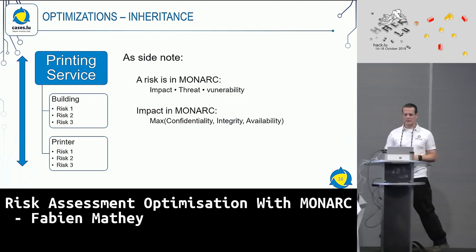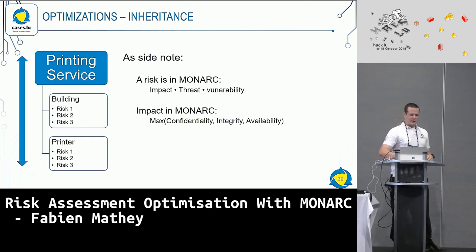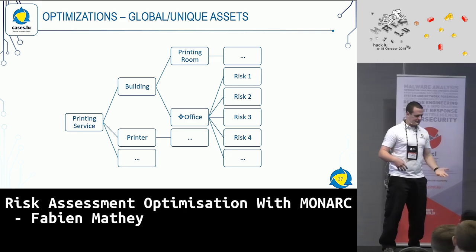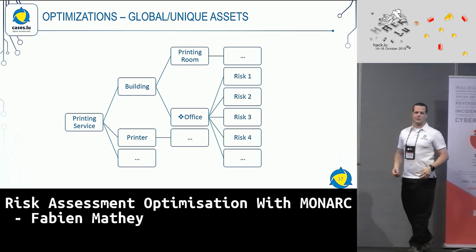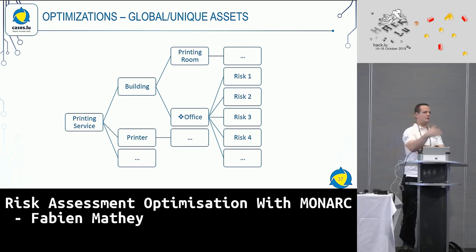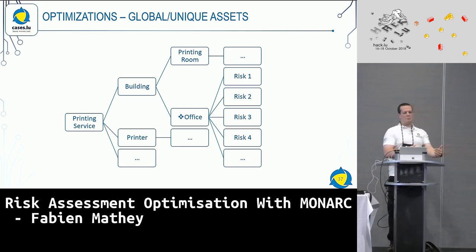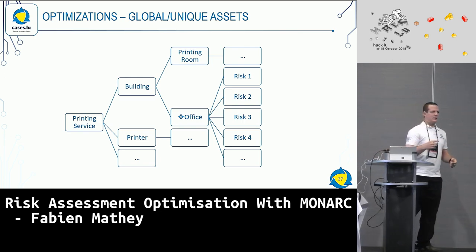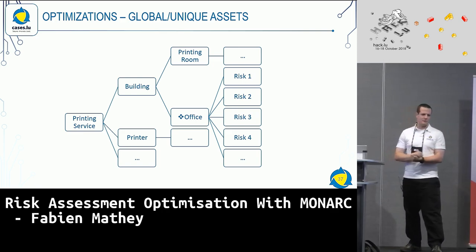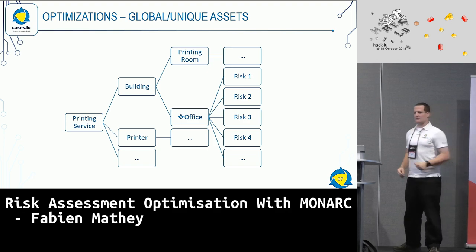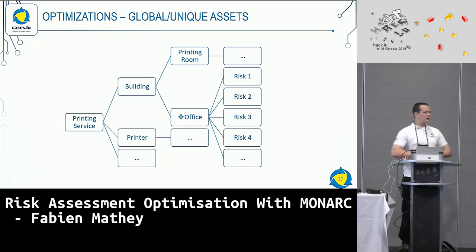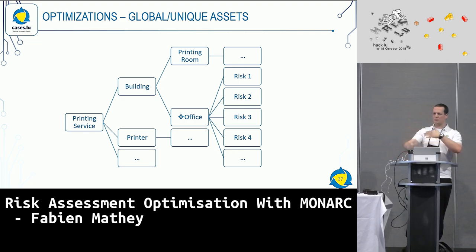I will show that later on in a small demo. Sometimes a primary asset — like a printing service and a calligraphy service — they share the same building or office. Instead of remodeling the same office twice with the same risks twice, we introduced the notion of a global asset, which means you have one asset that you can put in many of the primary assets. You only need to evaluate it once — that is another speed-up.